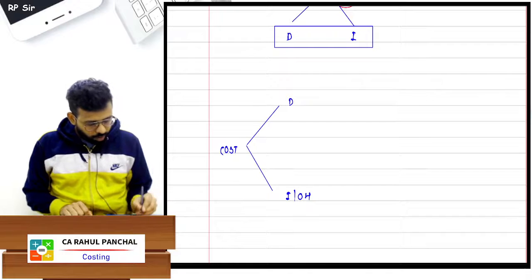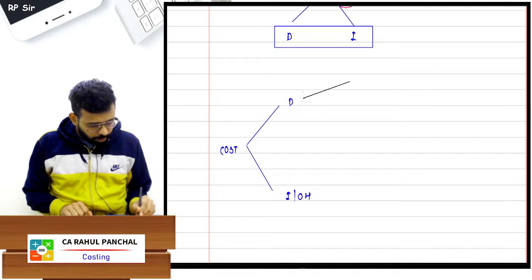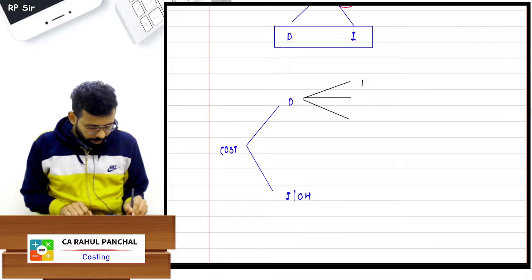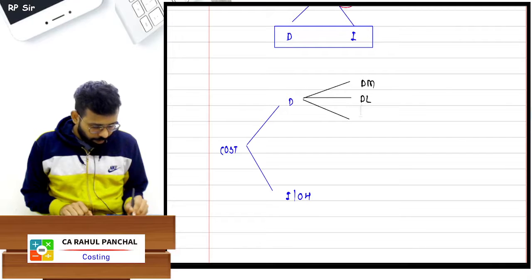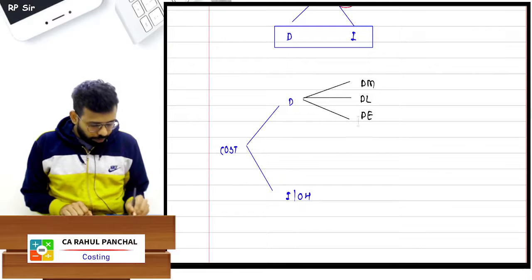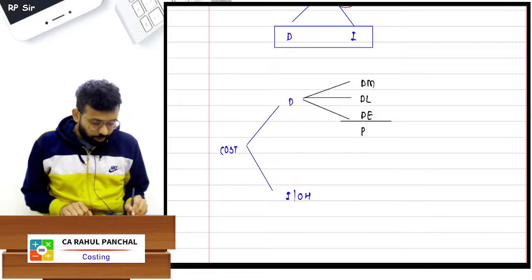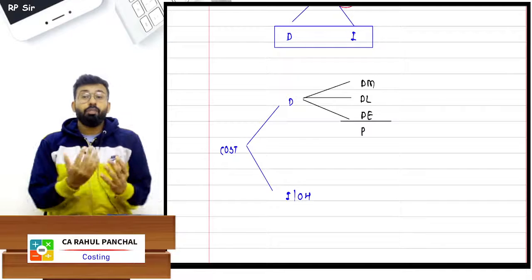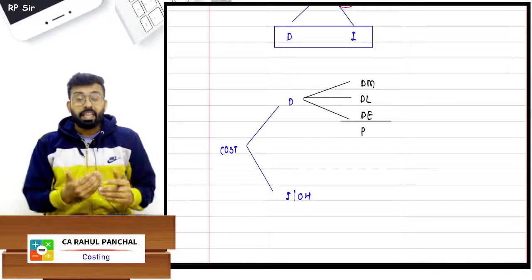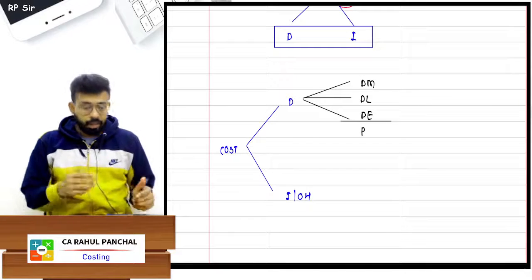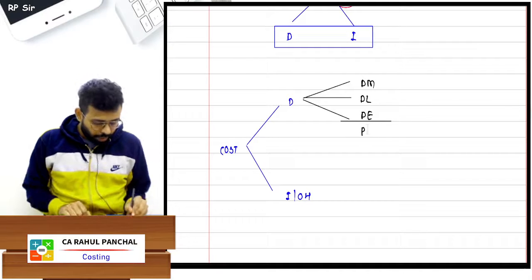If I talk about the direct cost, there are three parts: direct material, direct labour, and direct expenses. When you take the total of these, that is known as prime cost — the cost incurred at the very beginning.